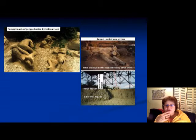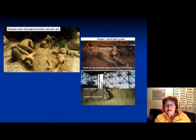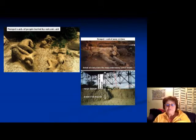The people of Pompeii basically suffocated and died, and the volcanic ash hardened around them, essentially making concrete casts of their bodies. This is how much volcanic ash was on top of them.